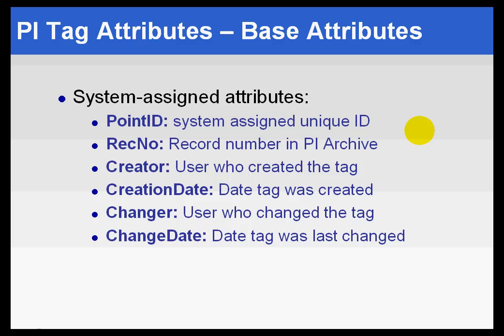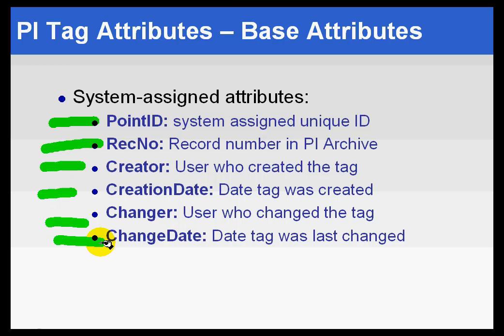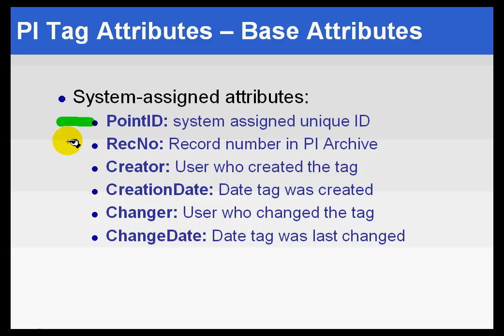Now, there are a number of attributes that are simply assigned by the system. For example, things like PointID, RecordNumber, Creator, CreationDate, and ChangeDate. These are all things you really don't have any control over. Every PI tag has these — they simply document the creation and change date, plus the internal ID used in some applications and the record number for storing in the archive.